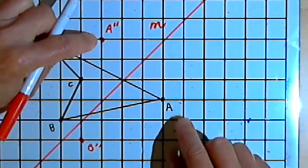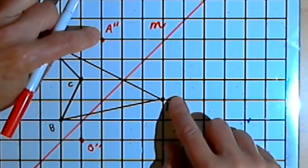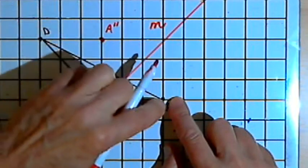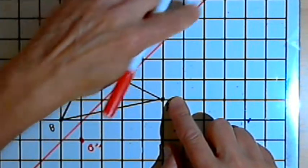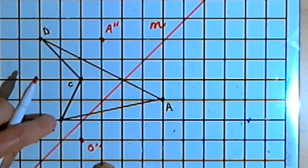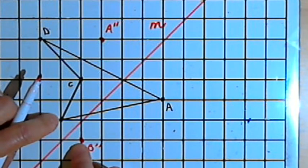Once again, if I connected, let's say, point A double prime with point A, I would have a line that went perpendicular to line M. The same thing would happen with points B and B double prime.